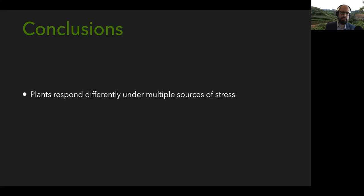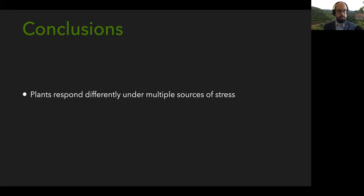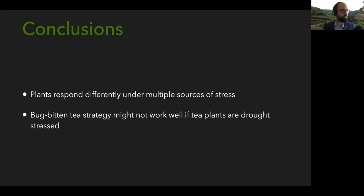Plants responded differently under multiple sources of stress. I think it's really important in climate change studies to include multiple things that plants are going to experience — they're not going to experience drought stress alone, but also potentially changes in insect herbivory from climate change effects on insect populations, as well as changes in CO2 concentration and ozone. It's important to do more studies looking at combinations of those variables because there can be interactive effects, not just additive effects. This also means the bug-bitten tea strategy might not work as well if tea plants are experiencing other stressors like drought.